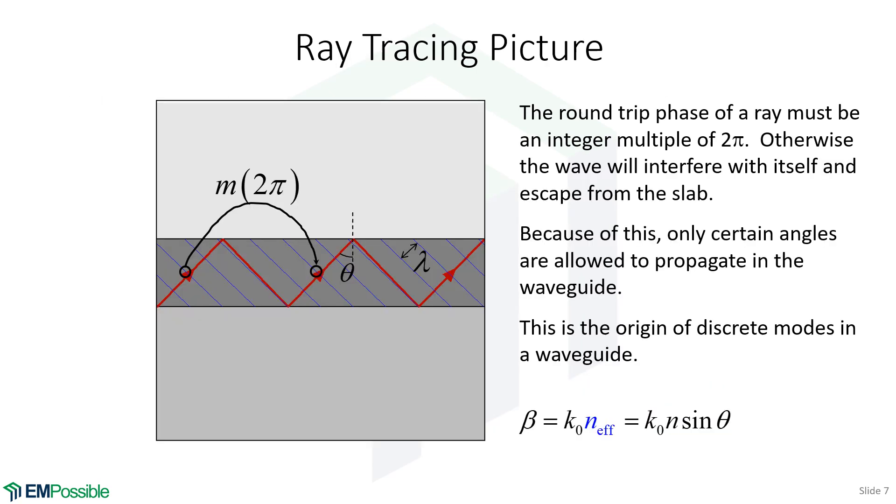Something else has to happen because we can have many rays in this slab region. With total internal reflection, the ray reflects off the first interface, comes down, reflects off the second interface, and keeps doing that. However, we have to look at this point where it repeats. As the wave propagates, it accumulates phase.